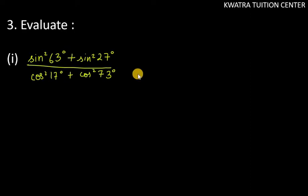Hello everyone, let's start with question number 3 of exercise 8.4. It says: sin square 63 degree plus sin square 27 degree, over cos square 17 degree plus cos square 73 degree.